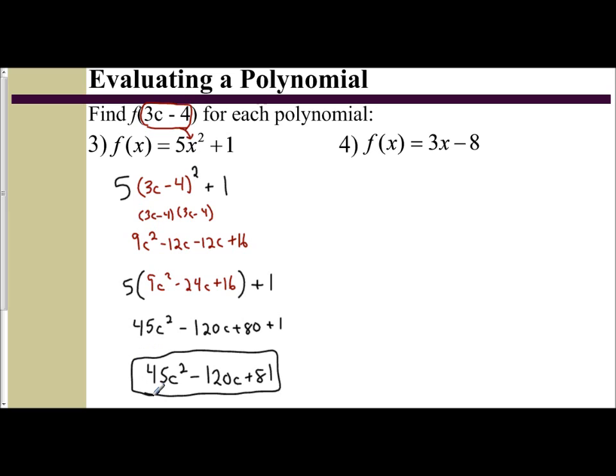So you can evaluate a polynomial for a variable expression. Just plug it in. Make sure you put in parentheses. Do your order of operations. We're going to do the exponents first. So we distribute, get our trinomial, then we're going to multiply by 5 and then combine or add 1. It's the same idea for number 4.